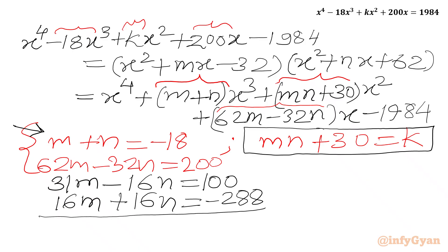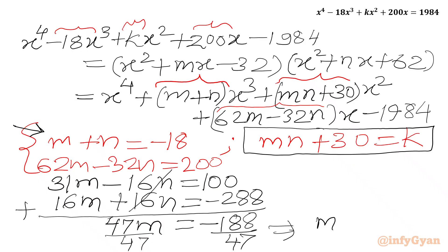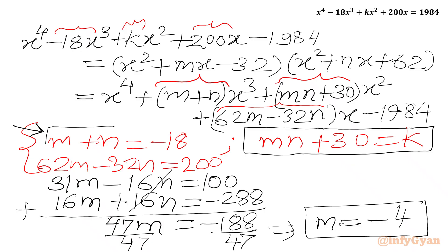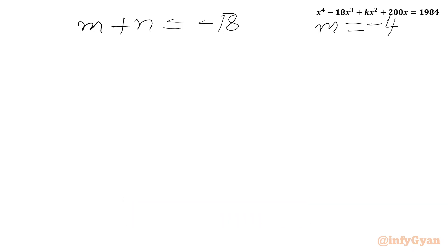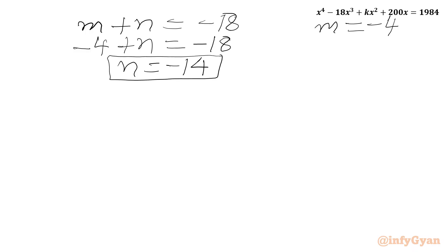Adding the two equations: 31 plus 16 is 47m equals minus 188. Dividing both sides by 47 gives m equals negative 4. With m known, substituting into m plus n equals minus 18: minus 4 plus n equals minus 18. Adding 4 to both sides, n equals negative 14. So n is minus 14 and m is minus 4.